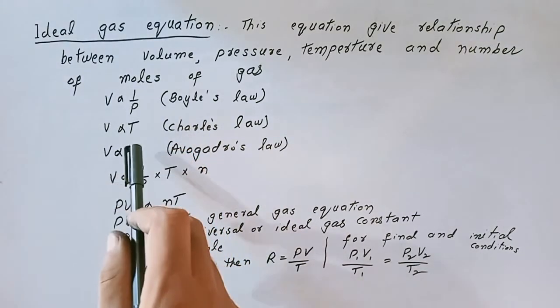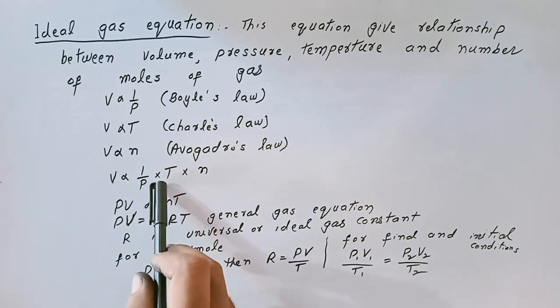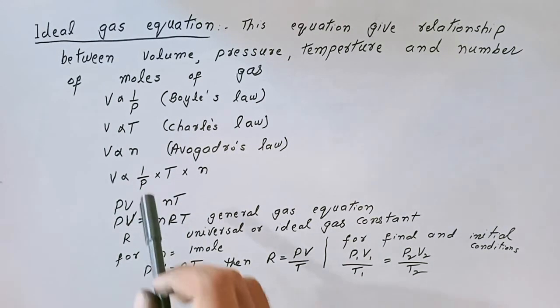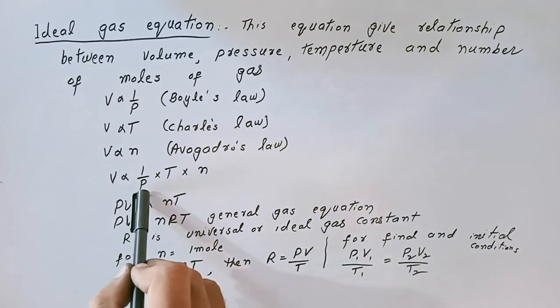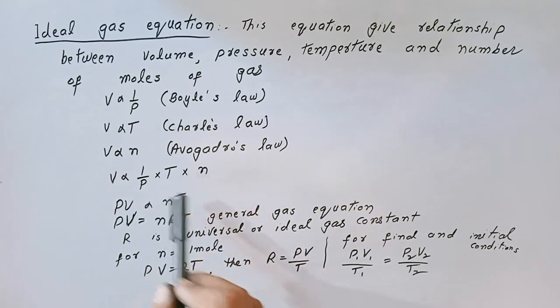By combining the three laws, we get volume is directly proportional to 1 over P multiplied by T multiplied by n. Then P will be multiplied by V, so PV is directly proportional to n and T.